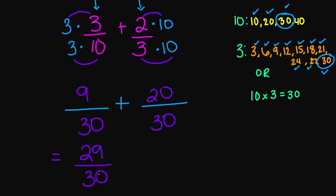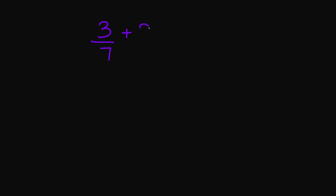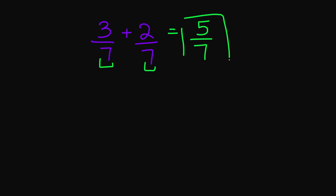I do not need to simplify any further, so this is my final answer: 29 over 30. Let's try 3 over 7 plus 2 over 7. My denominators are the same, so I'm going to add my numerators. 3 plus 2 is 5, and that's going to be over 7. My final answer is 5 over 7.